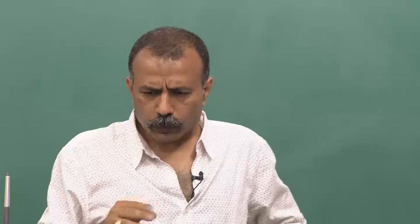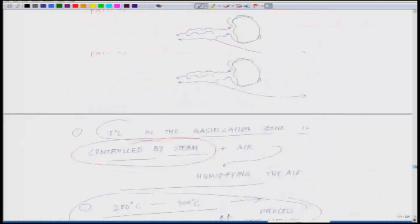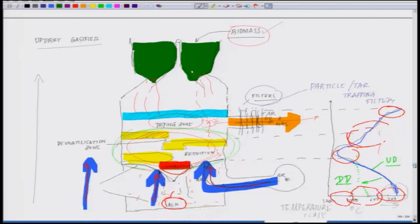Let us revise the whole thing. Fixed bed gasifiers are a very traditional process, functioning at around 1000 to 1400 degrees centigrade. In the updraft system, air comes from the bottom and goes upward. In the updraft, the gas coming out is at a much lower temperature — almost the same as the drying zone, around 200 degrees centigrade — making it the most efficient in terms of output gas temperature.